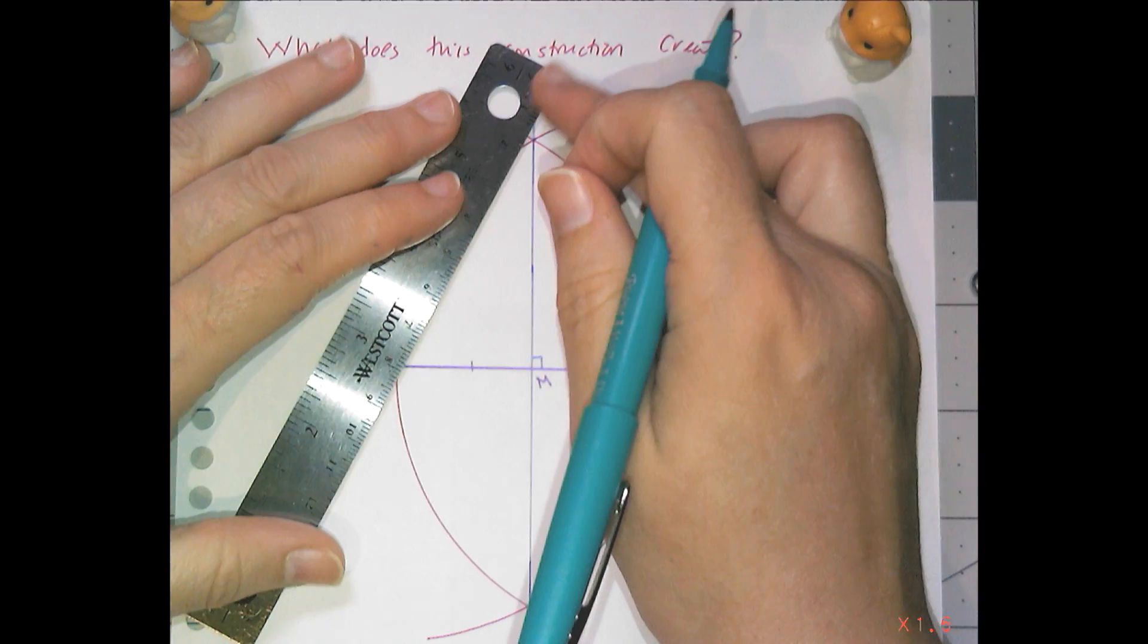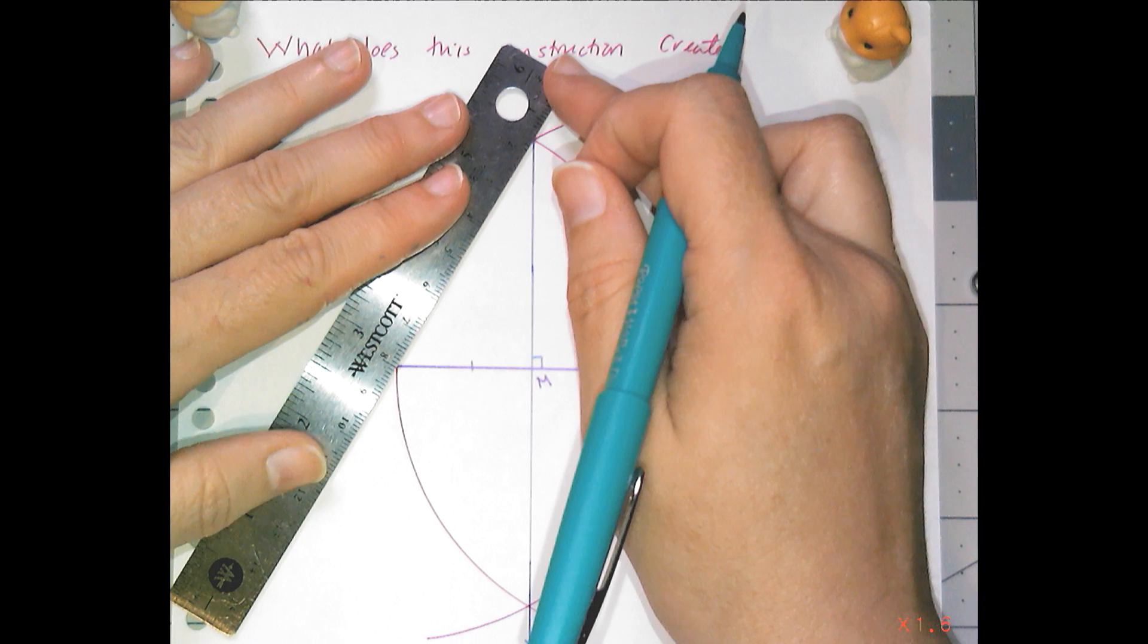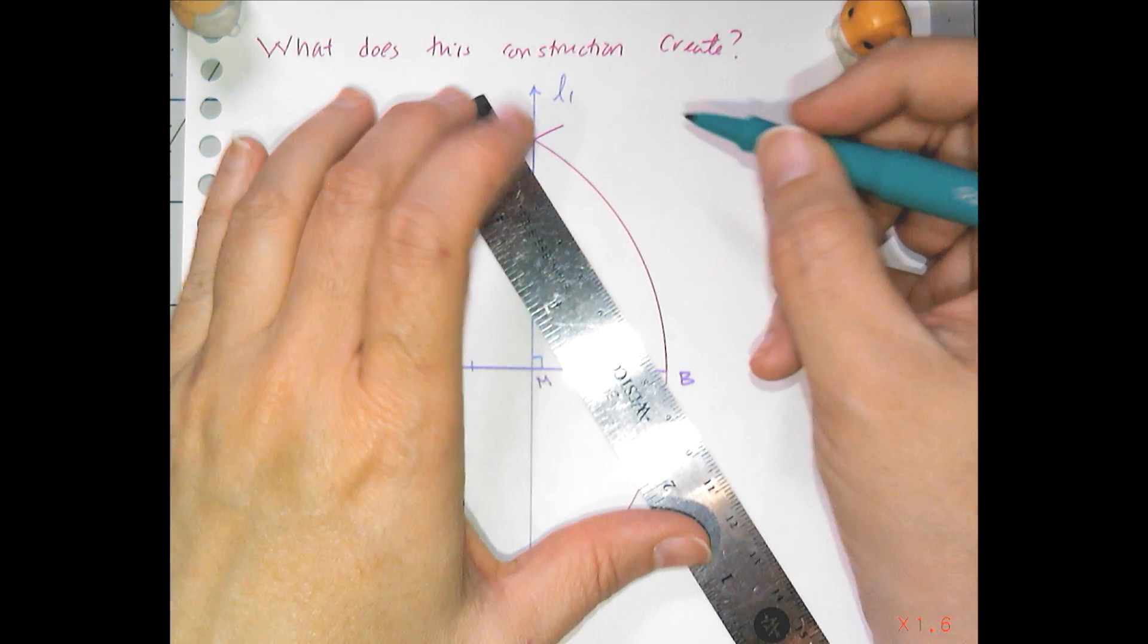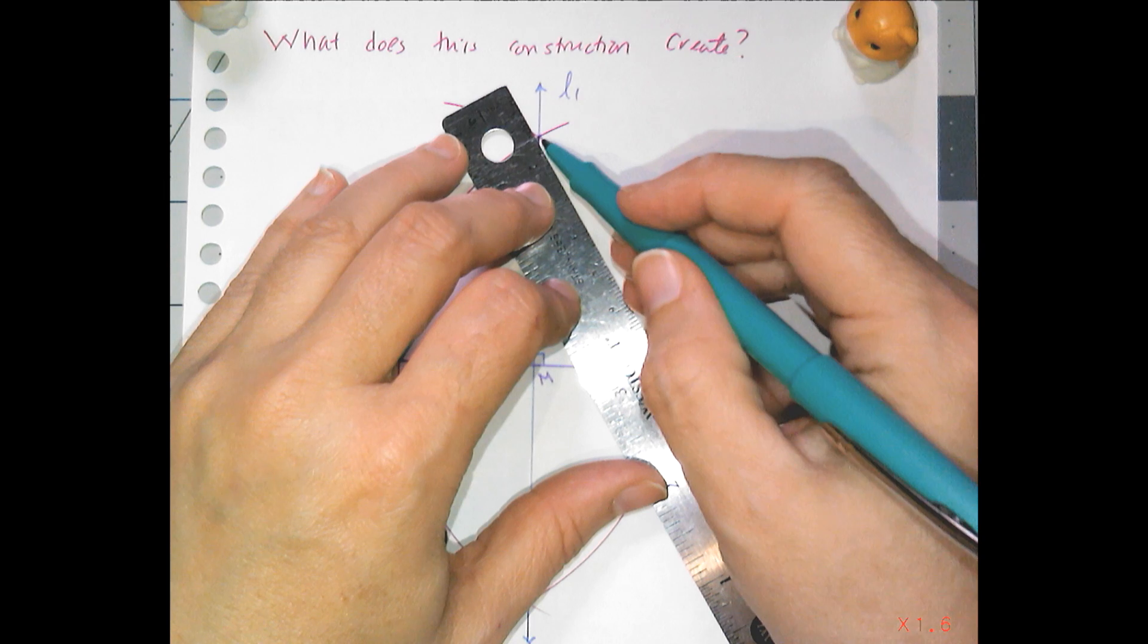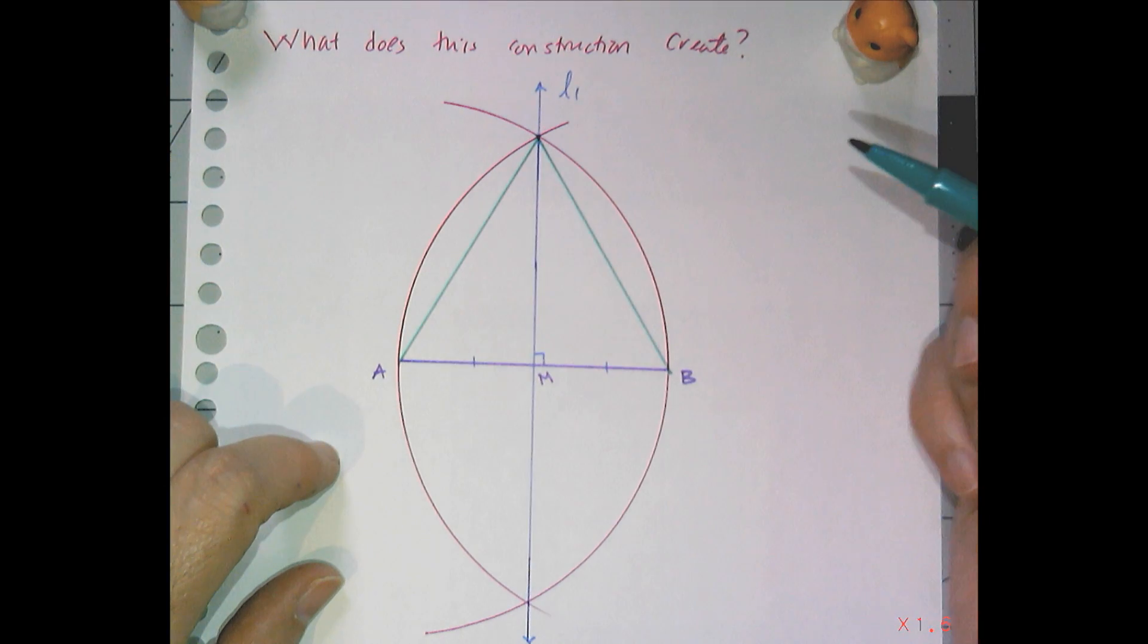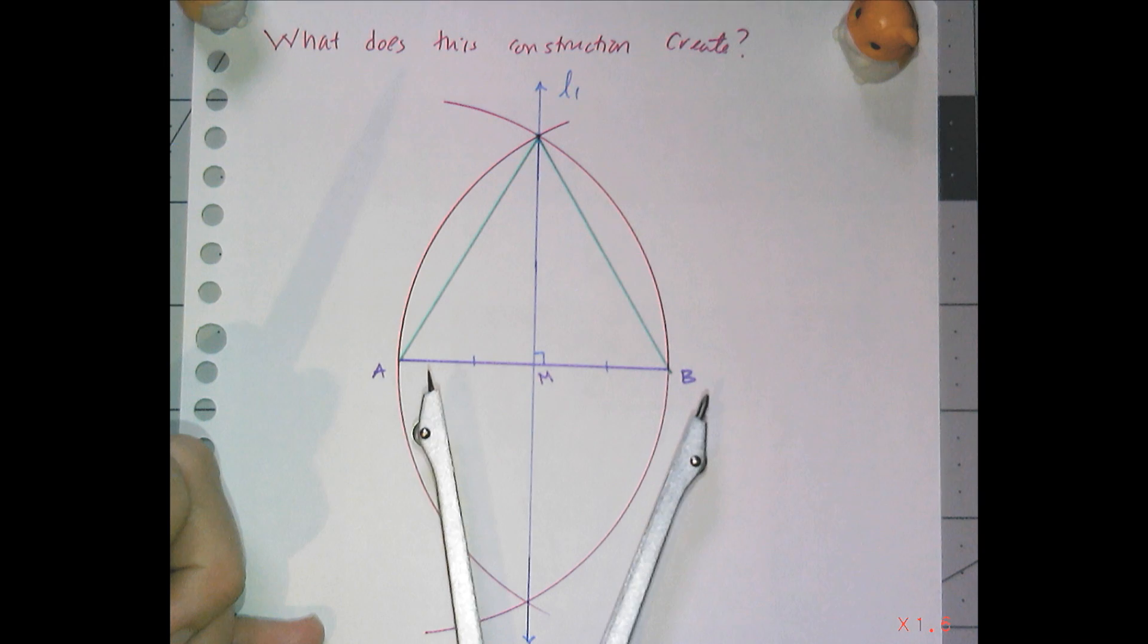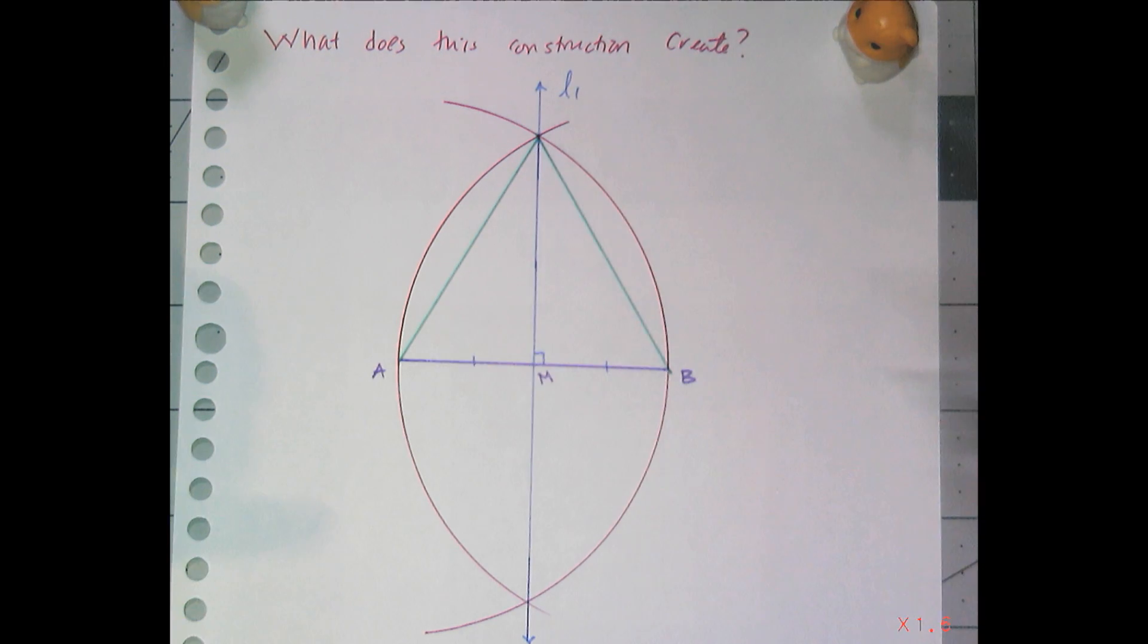And this distance from here to here is also the same. So if I were to connect the endpoints with the point where the arcs intersect at either the top or the bottom, like up here and up here, then I just created an equilateral triangle. So this length is equal to that length is equal to that length because they're all radii of identical circles.